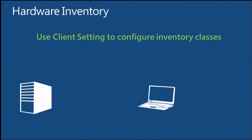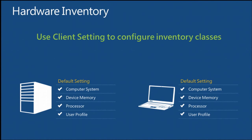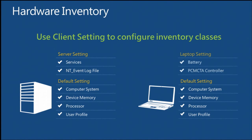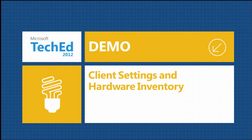In the demo, you create client settings to configure inventory classes. The default settings show the classes you want every single client to report — your organization-wide standards. Brian's custom server settings can enable additional classes like services and NT event log. For desktops and laptops, different classes like battery and PCMCIA adapter can be enabled. Different inventory information is customized through custom client settings while defaults apply to everyone.